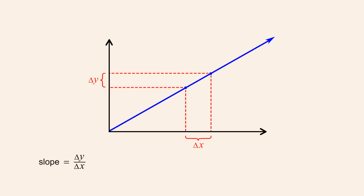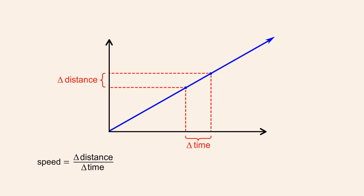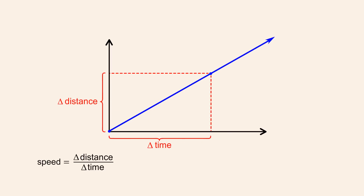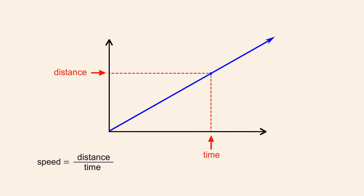Just as slope is defined as the change in the vertical coordinate over the change in the horizontal coordinate, speed is defined as the change in distance over the change in time. If the change in distance and time are measured starting from the beginning of the trip, then our speed is simply the distance divided by the time, measured at any point along the trip, assuming, of course, that our speed is constant.